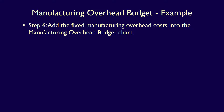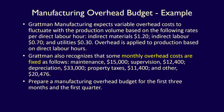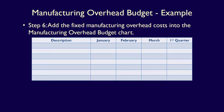Step 6: add the fixed manufacturing overhead costs into the manufacturing overhead budget. Going back to the question, monthly fixed costs are maintenance of $15,000 per month, supervision of $12,400 per month, depreciation of $33,000 per month, property taxes of $11,400 per month, and other fixed costs of $20,476 per month. We now add all the descriptions: fixed costs as a heading, then maintenance, supervision, depreciation, property taxes, and other fixed costs, followed by a subtotal row, total fixed costs.